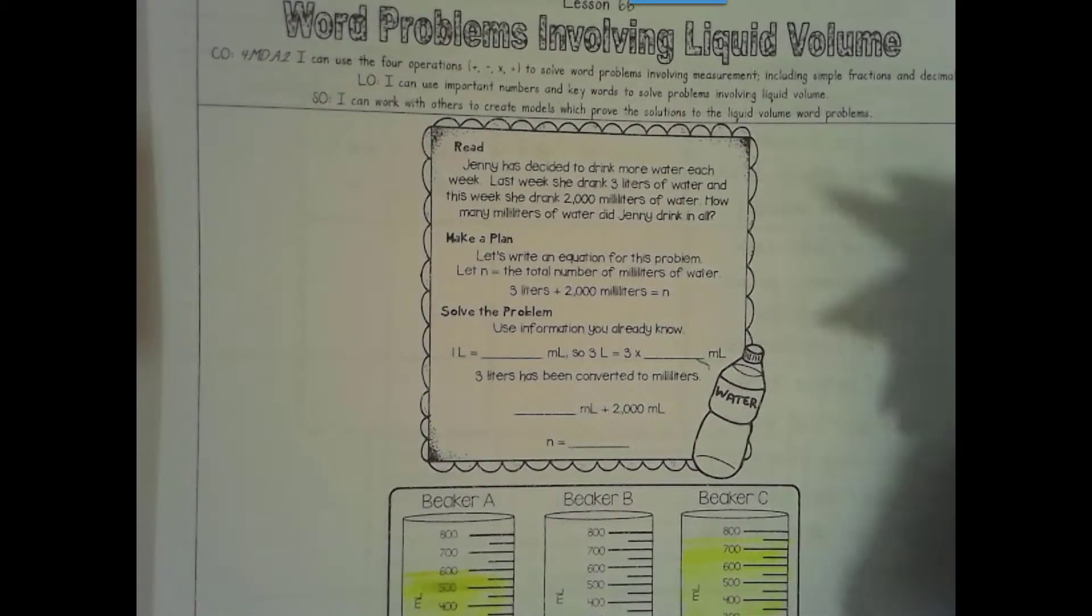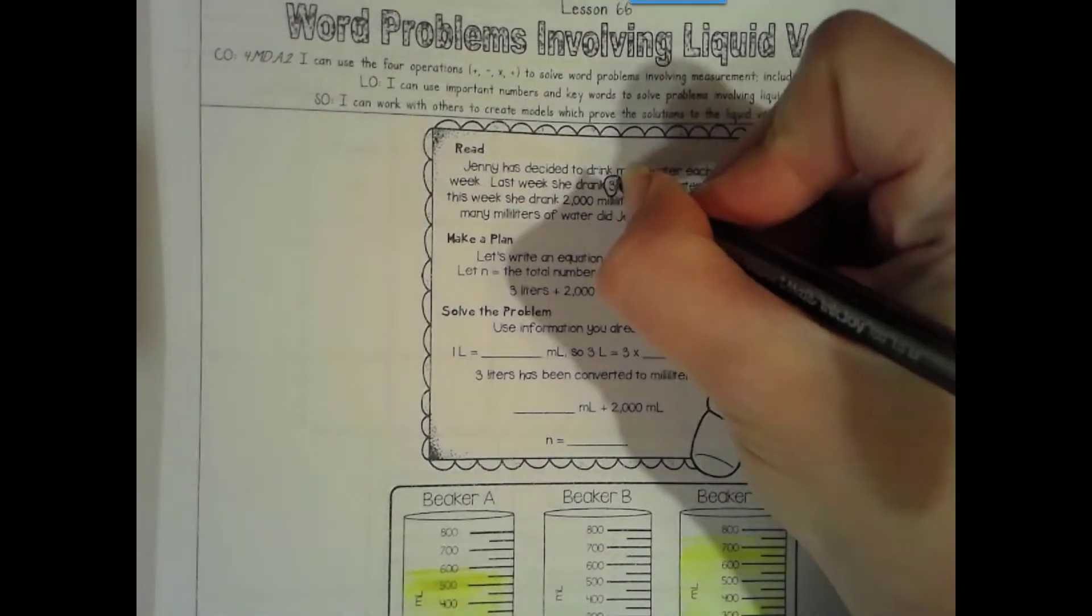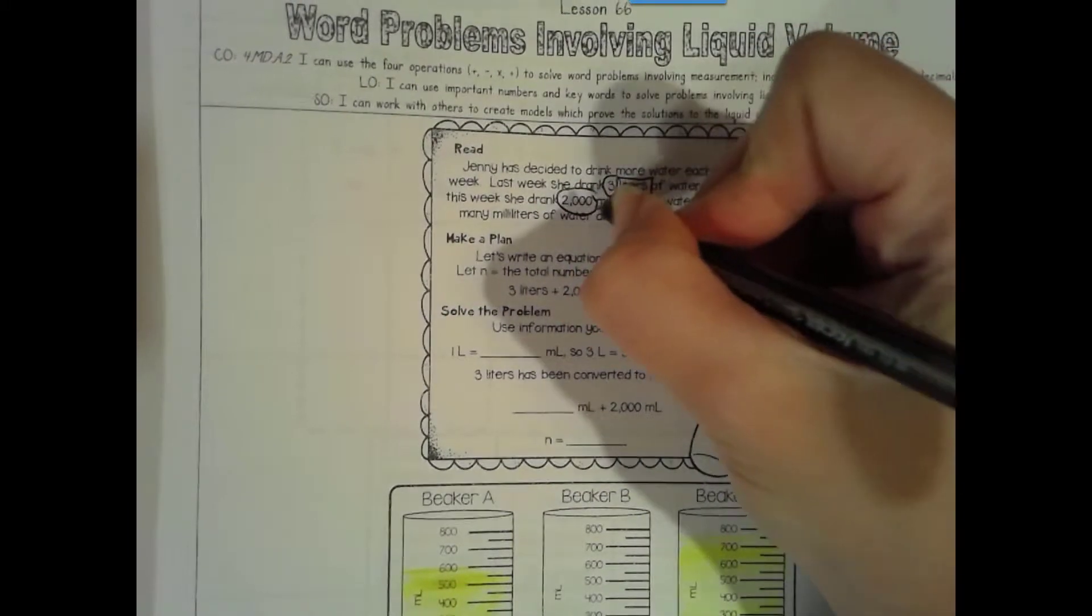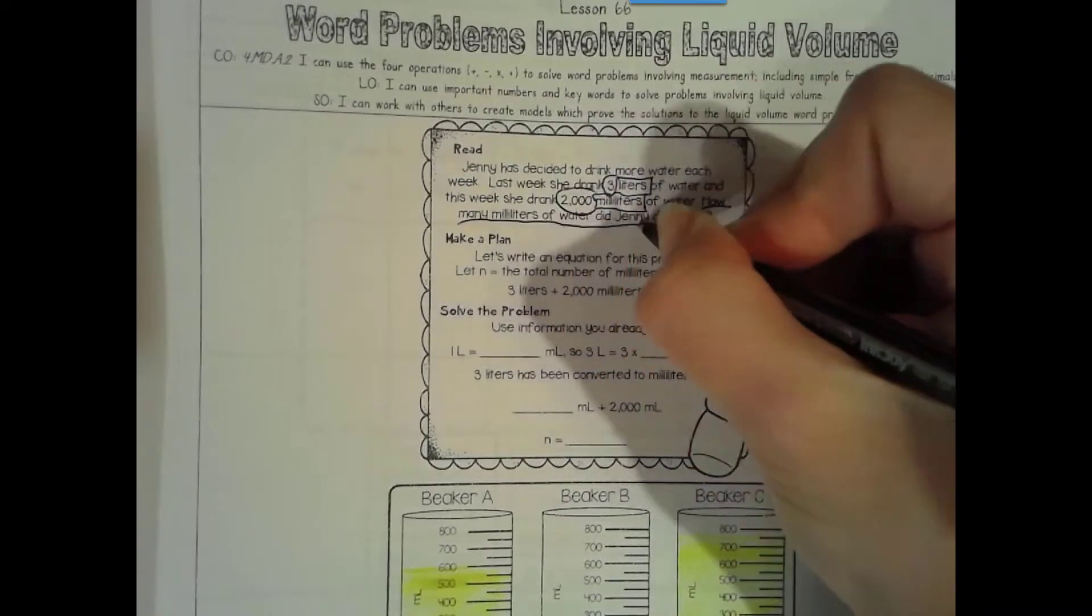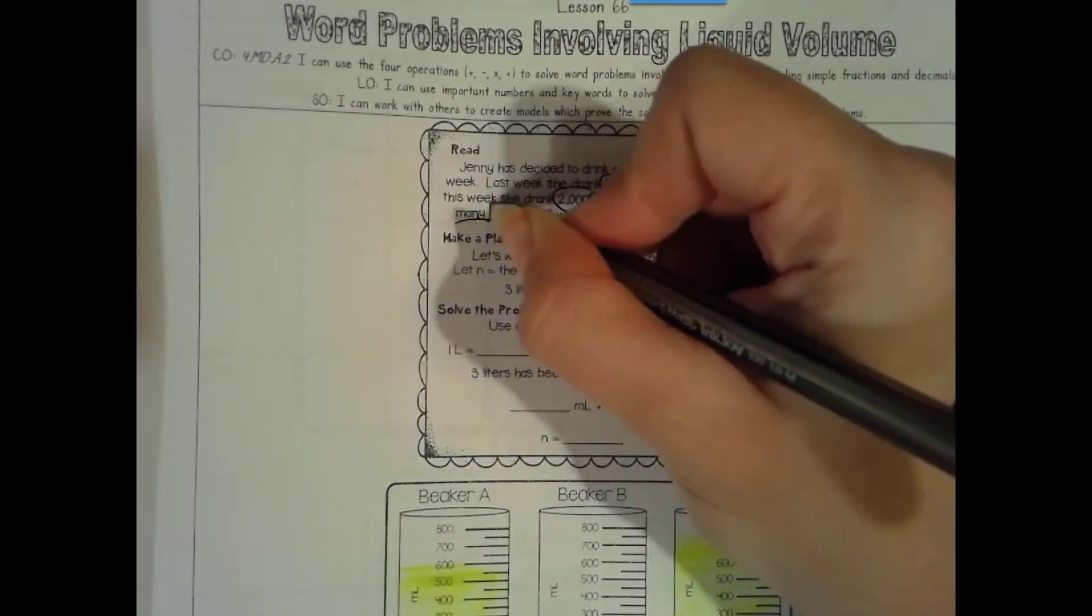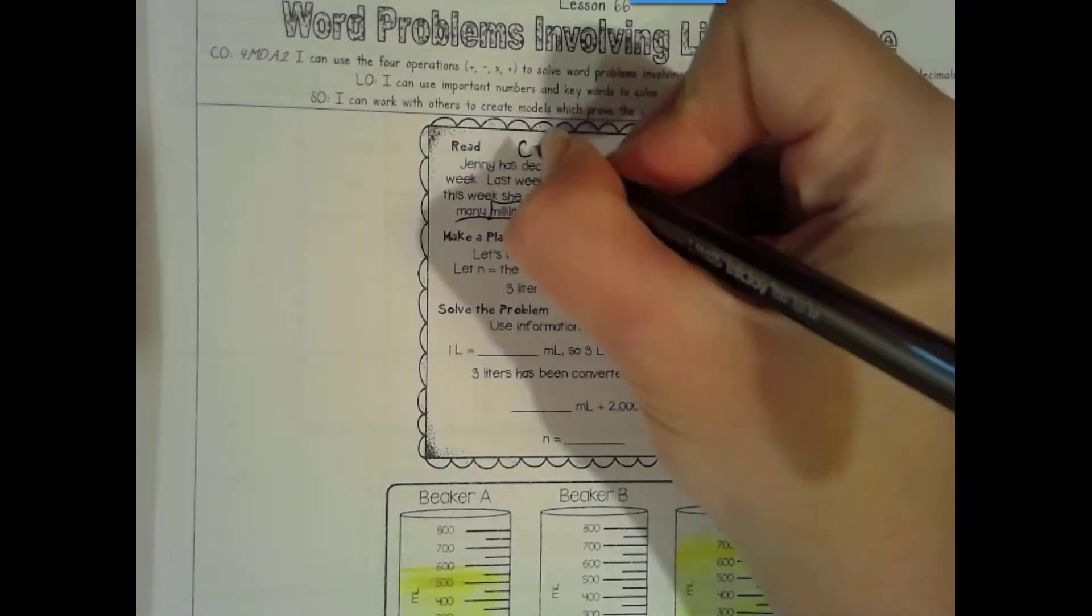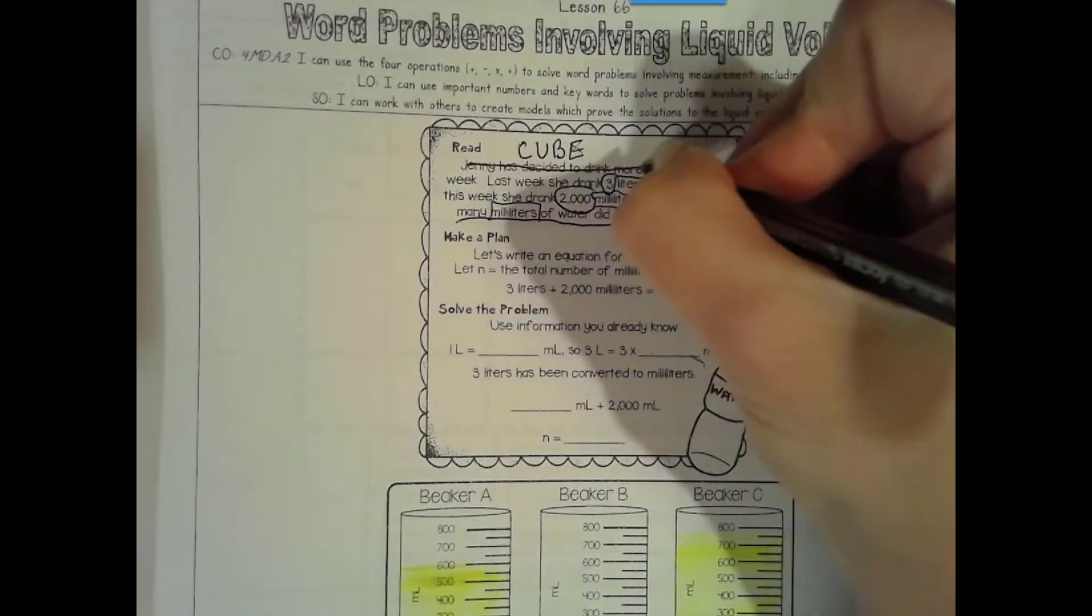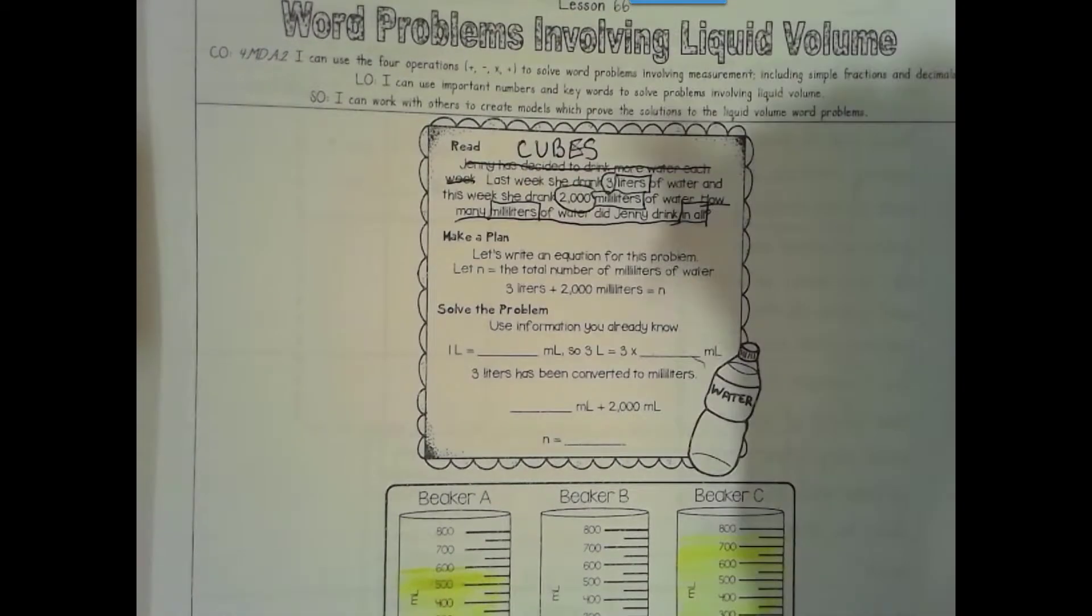On beaker B, we're going to the line right above 100, so 150. And then in beaker C, we're going up to the line right above 700 to 750. Alright, now let's go back to the top here.